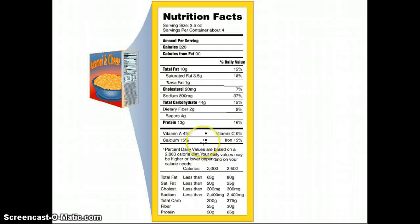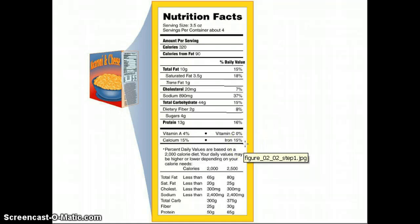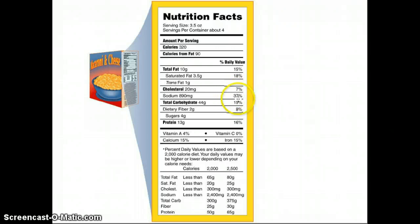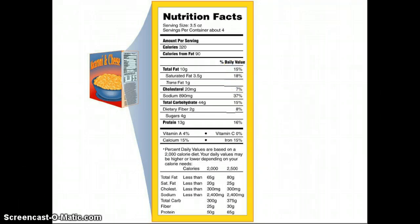There may be other vitamins and minerals it's a good source of as well, but they're not necessarily listed on the label. This is a really easy tool to use when you're shopping and looking for good sources of things, or maybe trying to cut back. For example, if you're trying to cut back on sodium, you'd pick a product with a smaller daily value for sodium or for saturated fat.